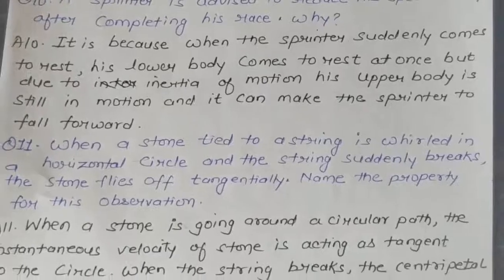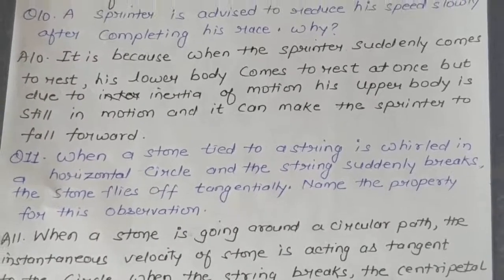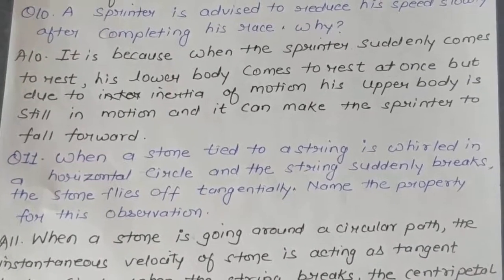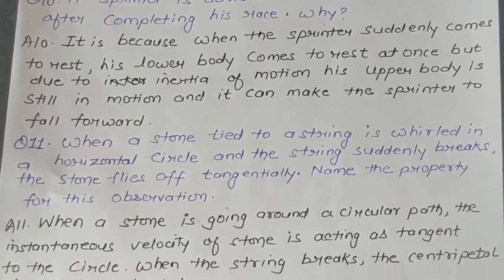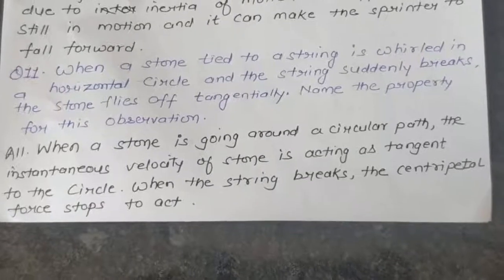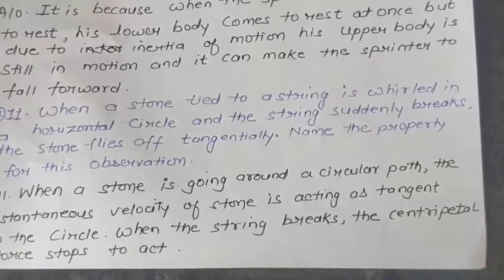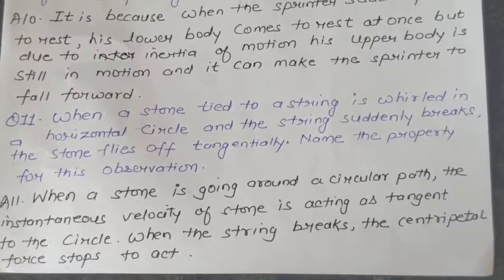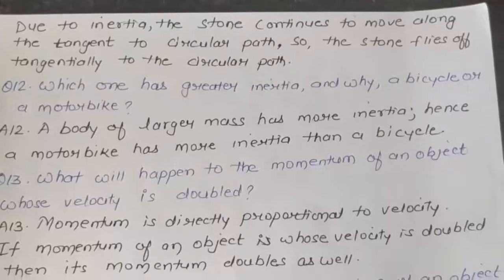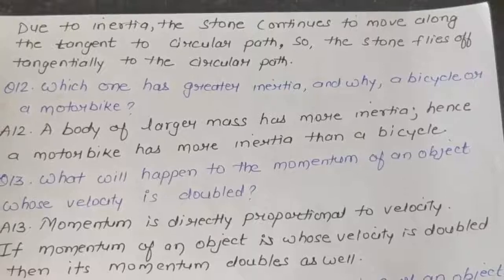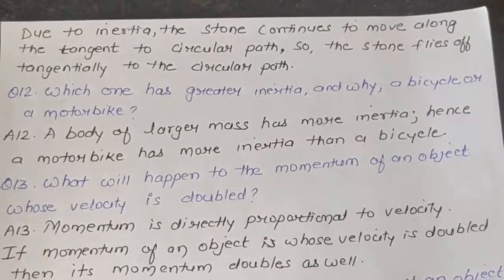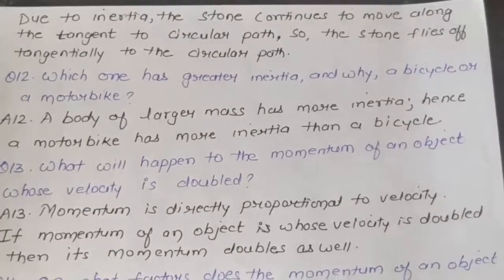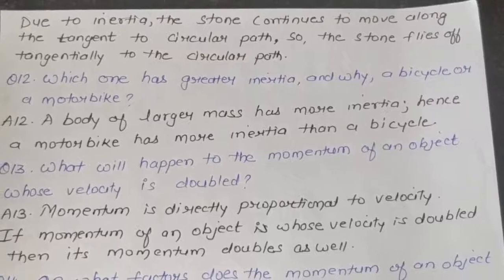Question 11: When a stone tied to a string is whirled in a horizontal circle and the string suddenly breaks, the stone flies off tangentially. Name the property for this observation. Answer: When a stone is going around a circular path, the instantaneous velocity is acting as a tangent to the circle. When the string breaks, the centripetal force stops acting, and due to inertia the stone continues to move along the tangent, so it flies off tangentially.